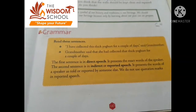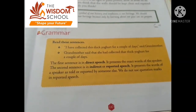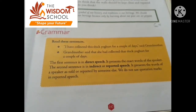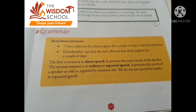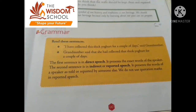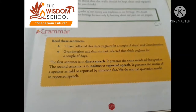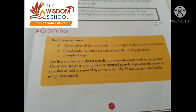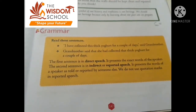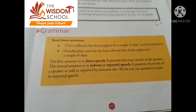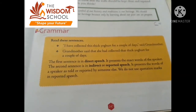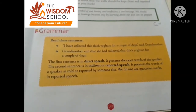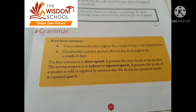The first sentence is in direct speech. It presents the exact words of the speaker, because the speaker has the exact words present. The second sentence is in indirect or reported speech. It presents the words of a speaker as told or reported by someone else — and that is the exact words of the speaker.